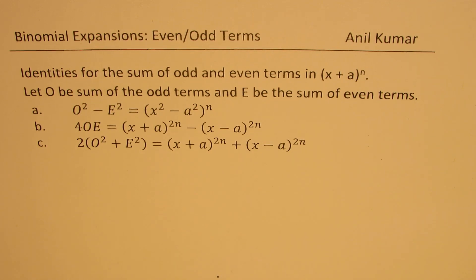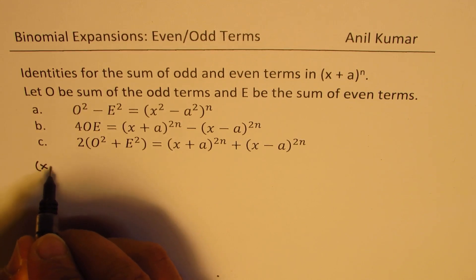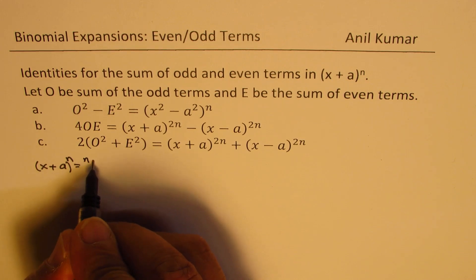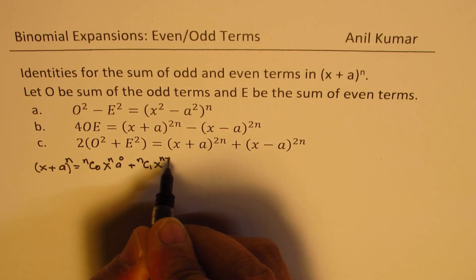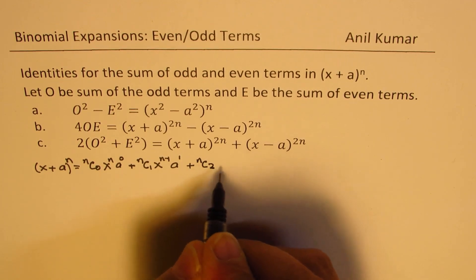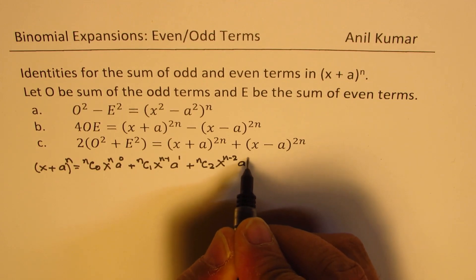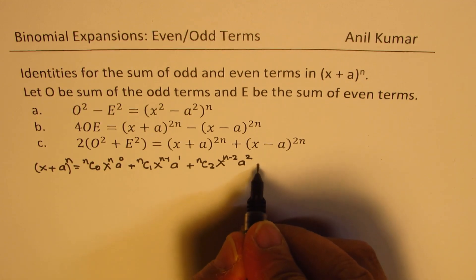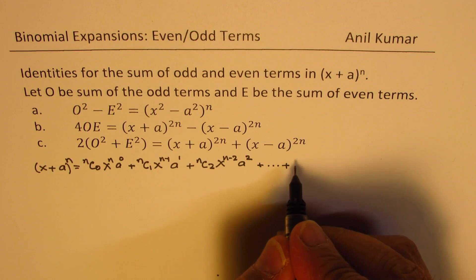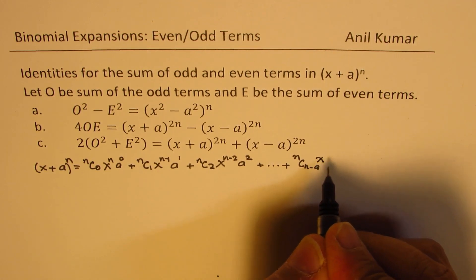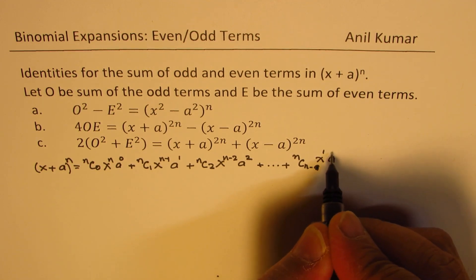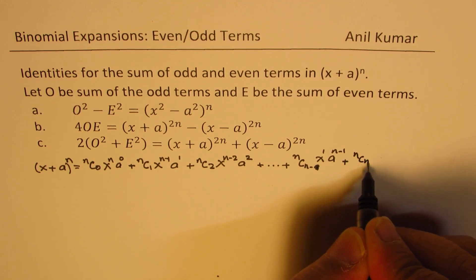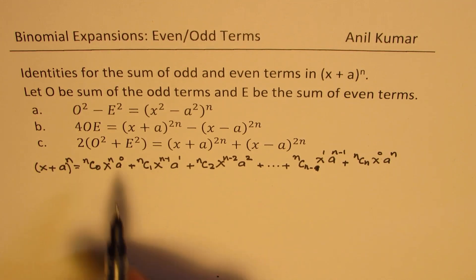These identities really help you solve many questions quickly. Let us first prove them. If we expand (x + a)^n in general, it is nc0·x^n·a^0 plus nc1·x^(n-1)·a^1 plus nc2·x^(n-2)·a² and so on, up to ncn·x^0·a^n. So we have n+1 terms in total.